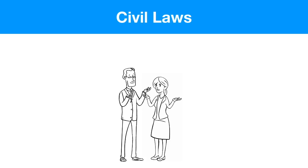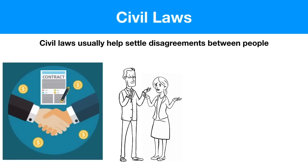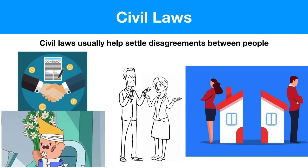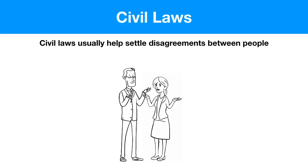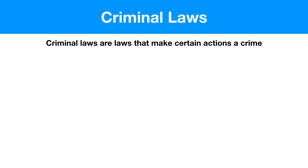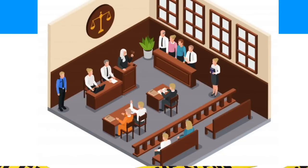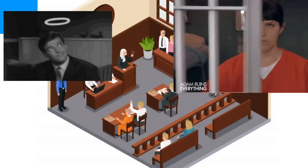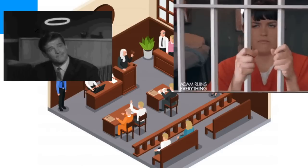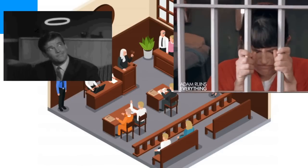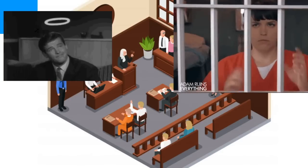Civil laws help citizens settle their disagreements, and these disagreements can be over contracts, personal injury, property, or even divorce or family issues. Nobody's going to be arrested because nobody's done a crime — it's just a disagreement between people. On the other hand, criminal laws are laws that make certain actions a crime. These involve a trial court where the state is prosecuting a defendant and trying to determine their innocence or guilt. Criminal law will absolutely involve an arrest, and if found guilty we're dealing with punishments that may include a loss of freedom — meaning you're going to jail.